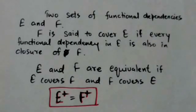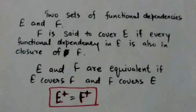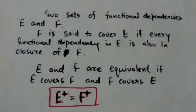The two sets of functional dependencies E and F are equivalent if E covers F and F covers E. Alternatively, we can say E and F are equivalent if the closure of E is equal to the closure of F.